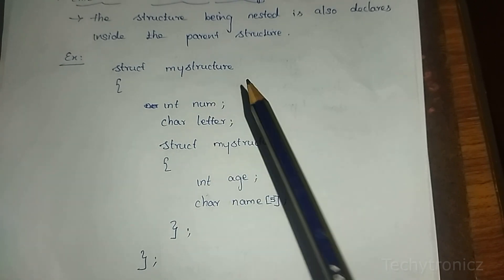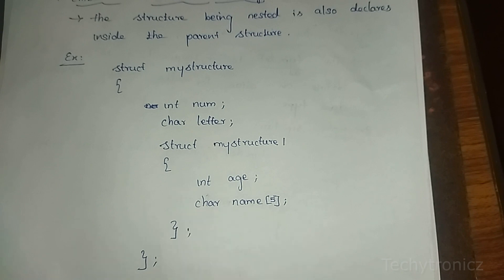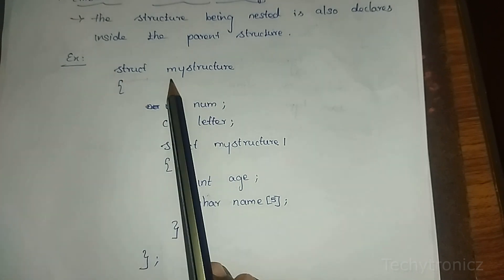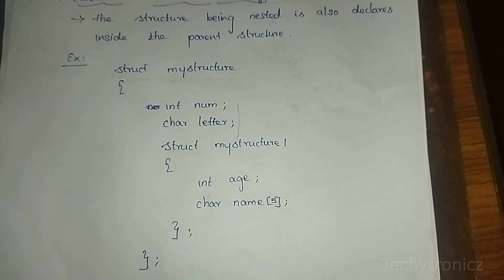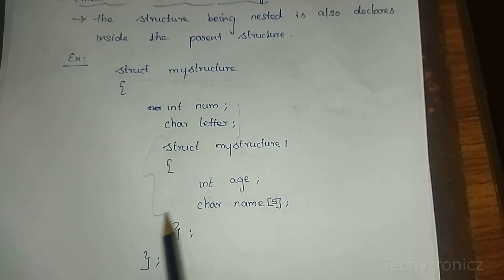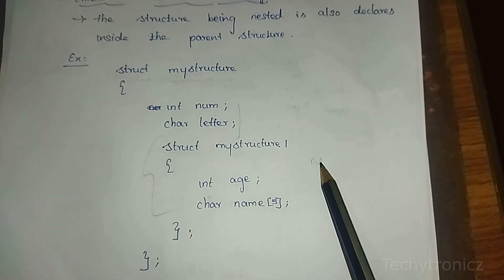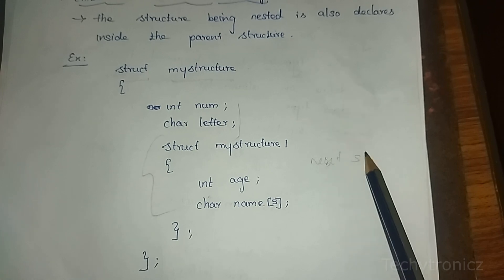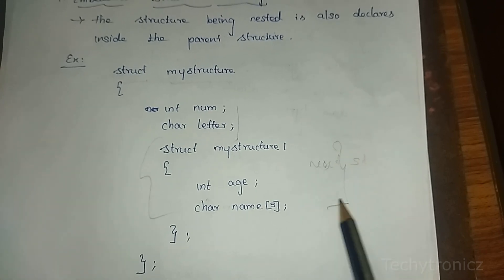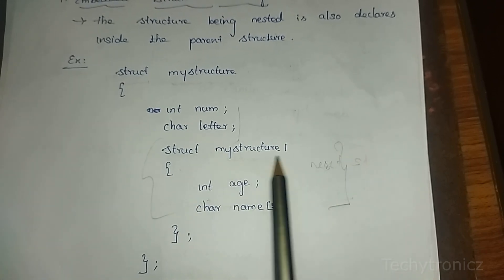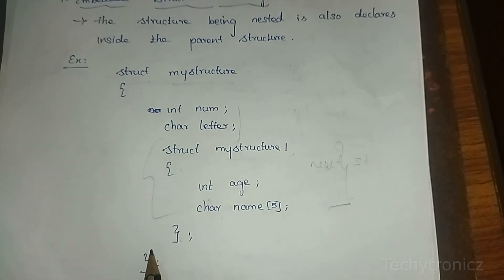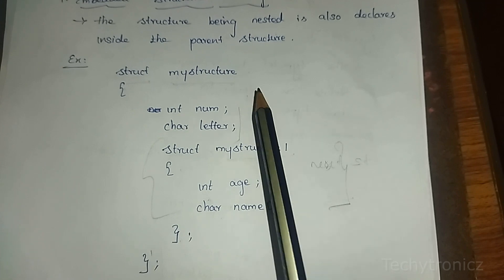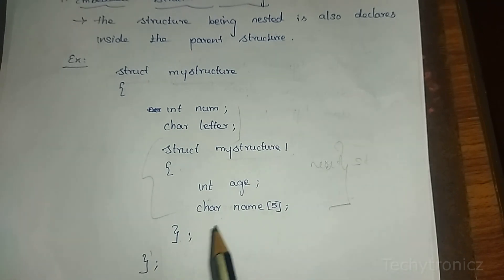In embedded structure nesting, one structure is declared inside another. For example: struct myStruct — open curly braces — and inside it, another structure is declared and nested. This inner structure is embedded within the outer structure — this is embedded nesting.